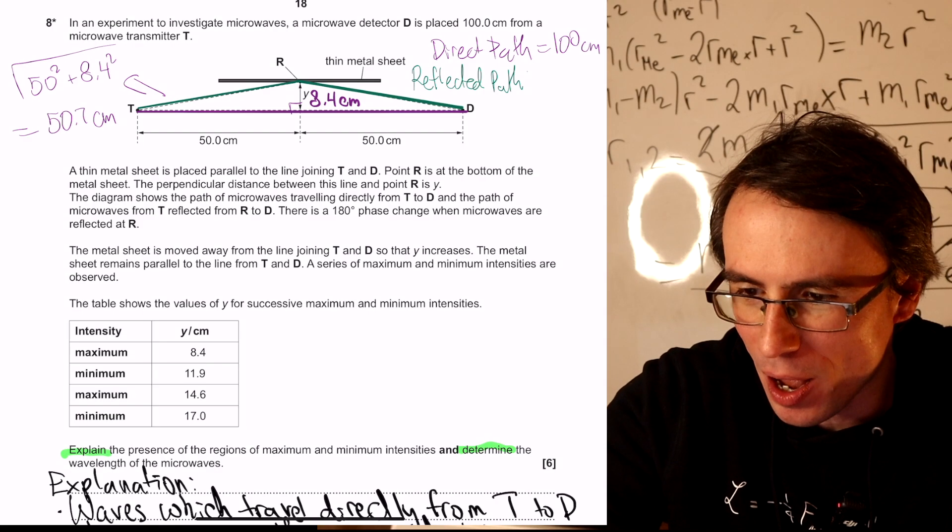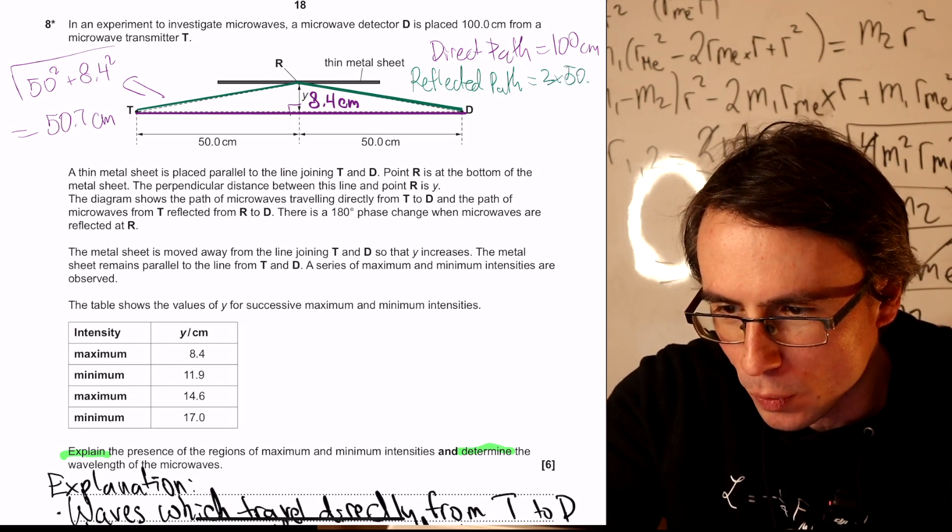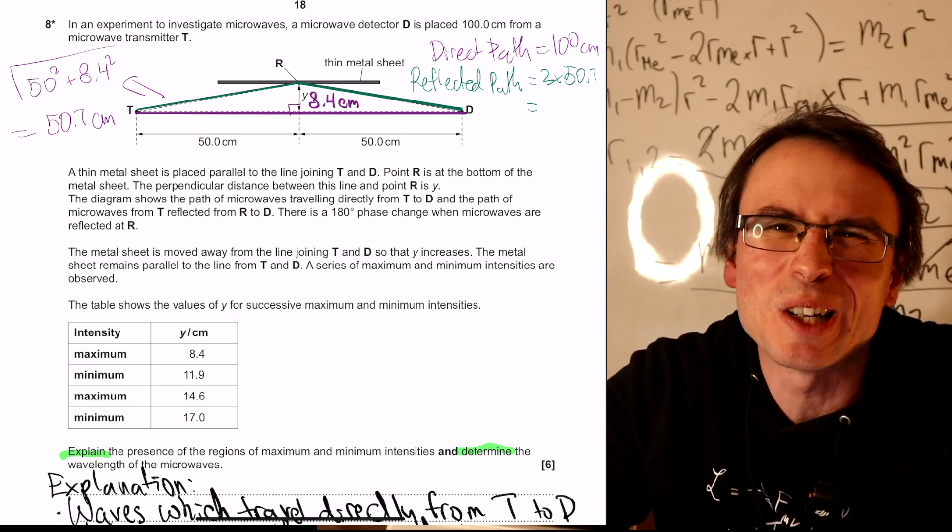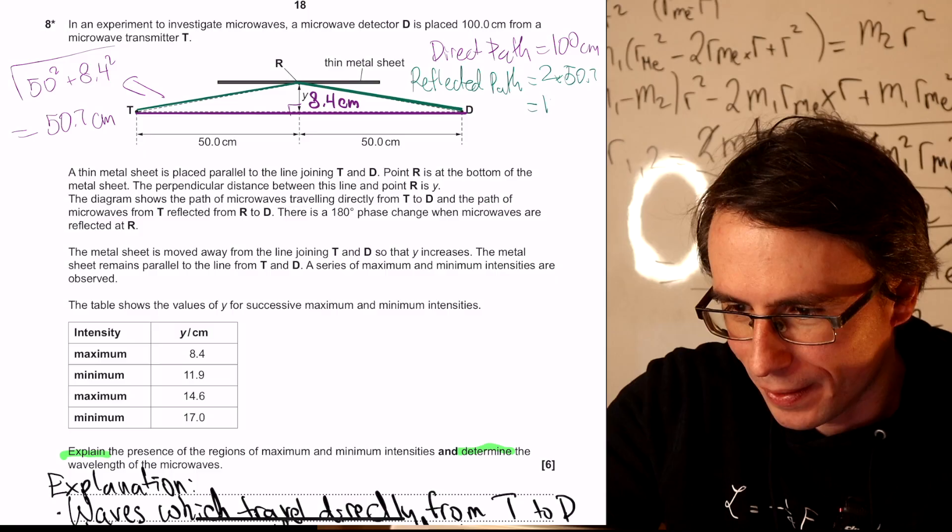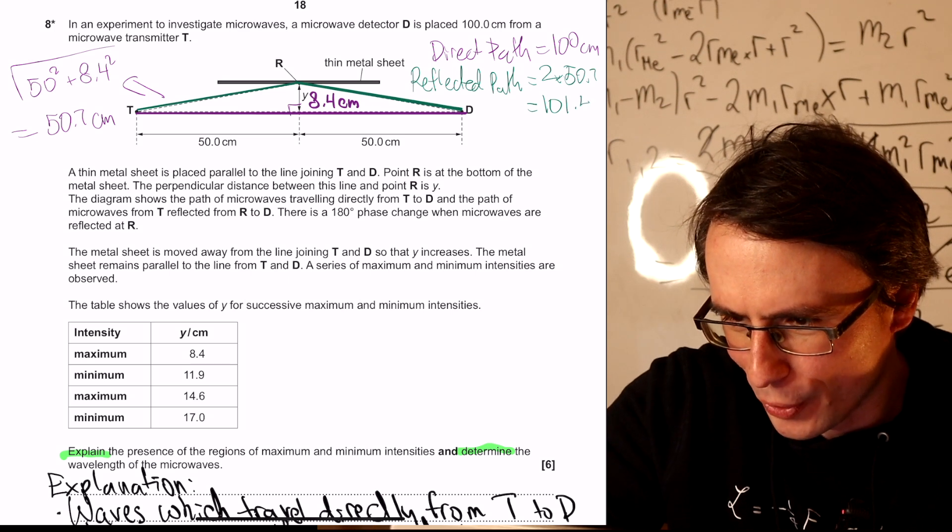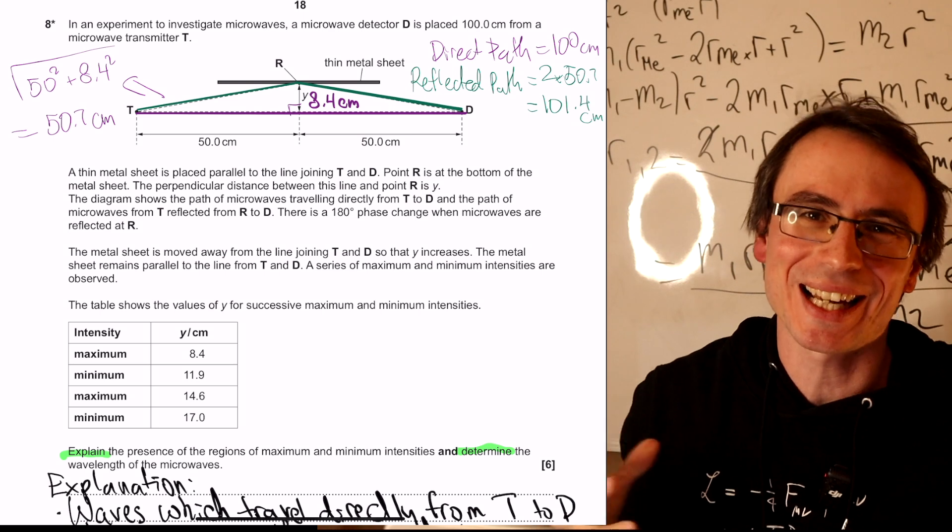I.e. the total reflected path is going to be 2 times 50.7. Let's write this to a little bit better. My handwriting is not the best. I'm sorry. That is 101.4 centimeters.